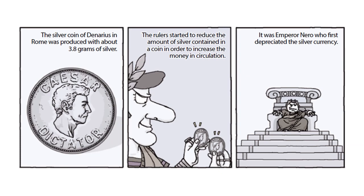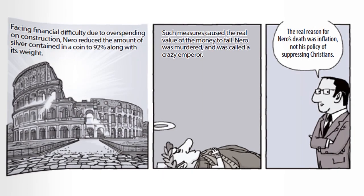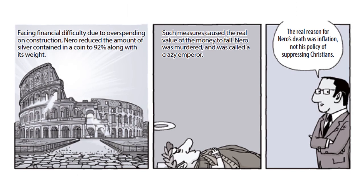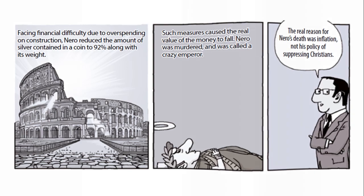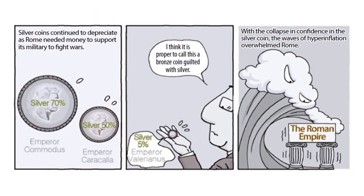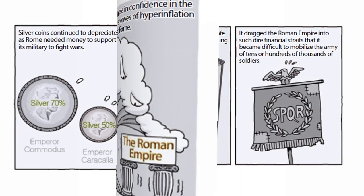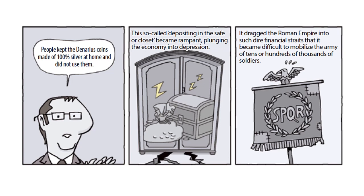It was Emperor Nero who first depreciated the silver currency. The real reason for Nero's downfall was inflation, not his policy of suppressing Christians. Silver coins continued to depreciate as Rome needed money to support its military to fight wars. With the collapse in confidence in the silver coin, waves of hyperinflation overwhelmed Rome. People kept the denarius coins made of 100% silver at home and did not use them — this so-called depositing in the safe became rampant, plunging the economy into depression.